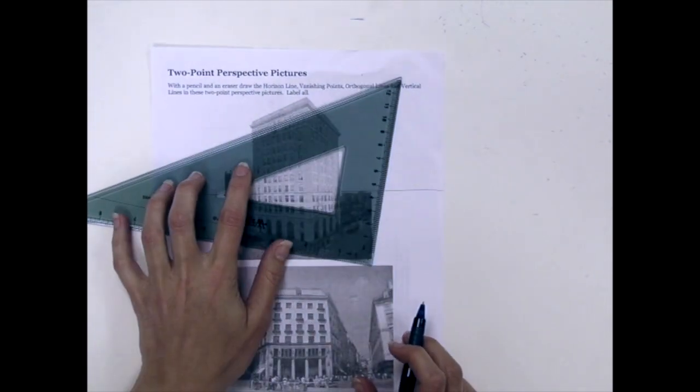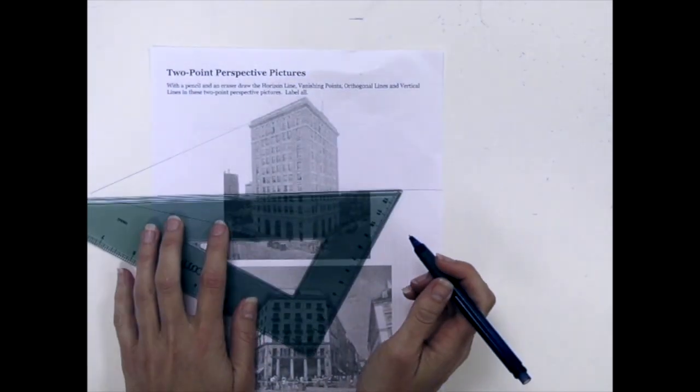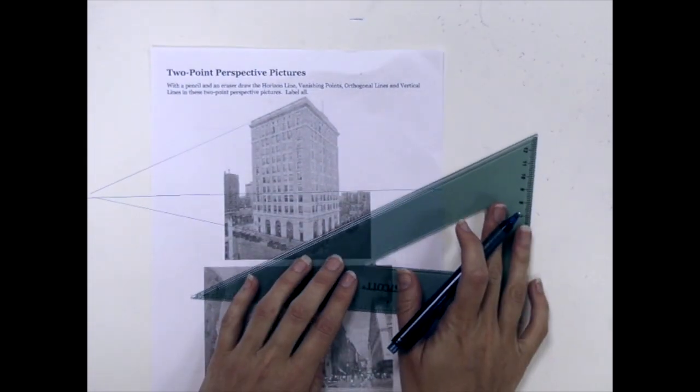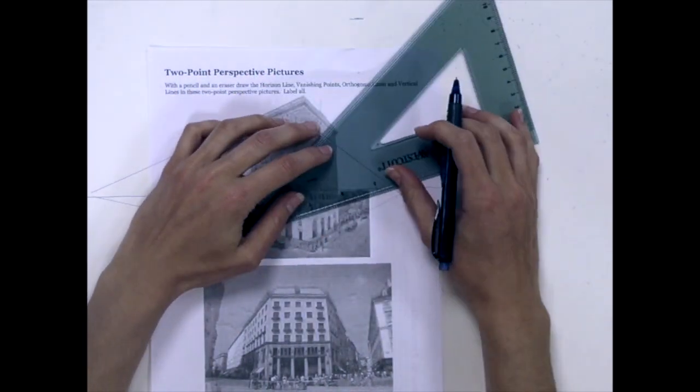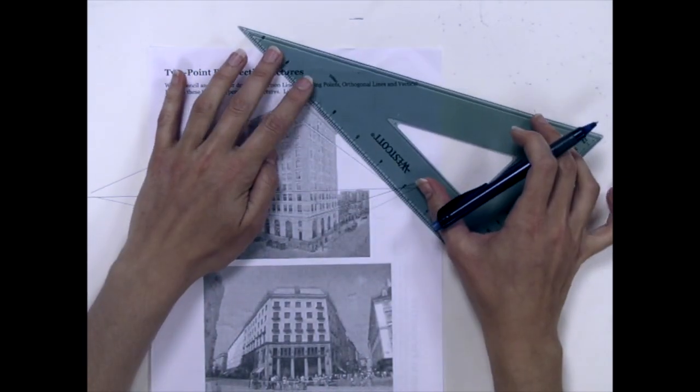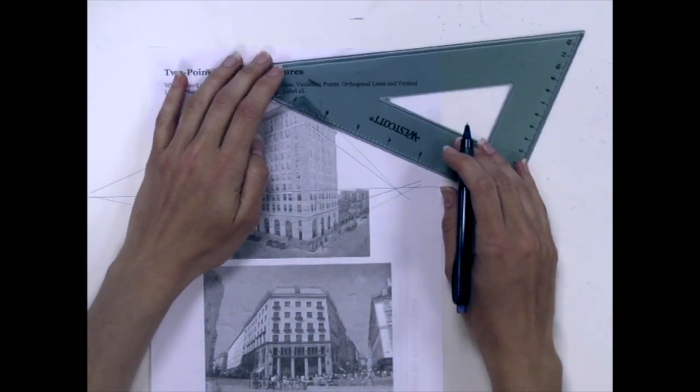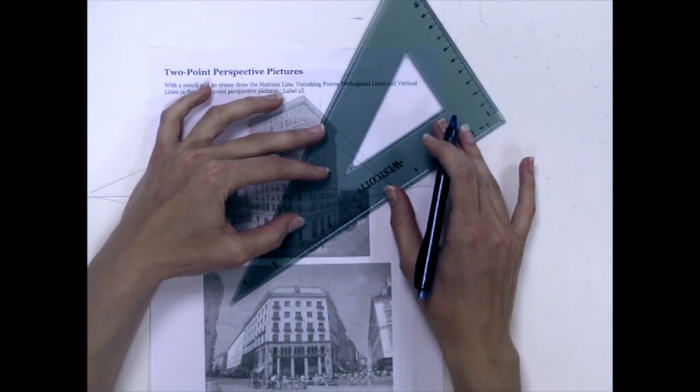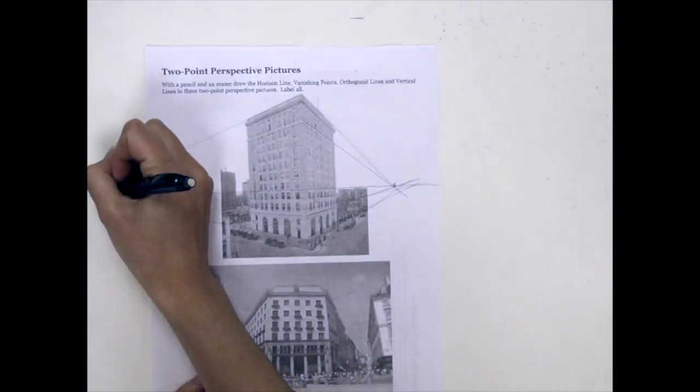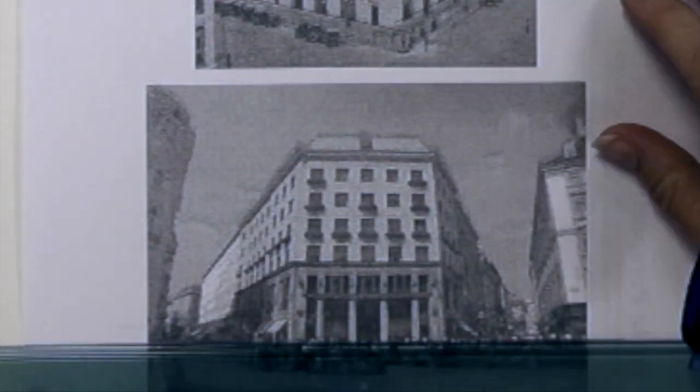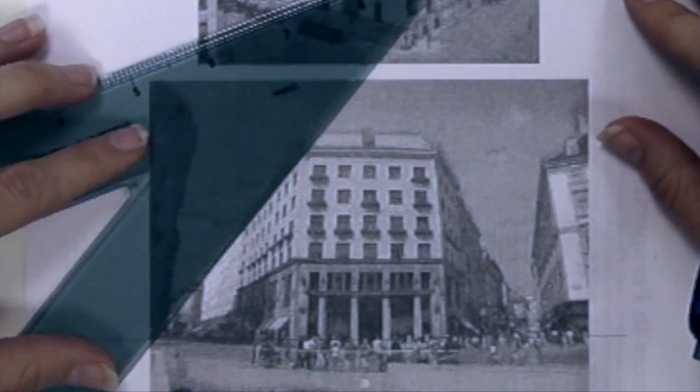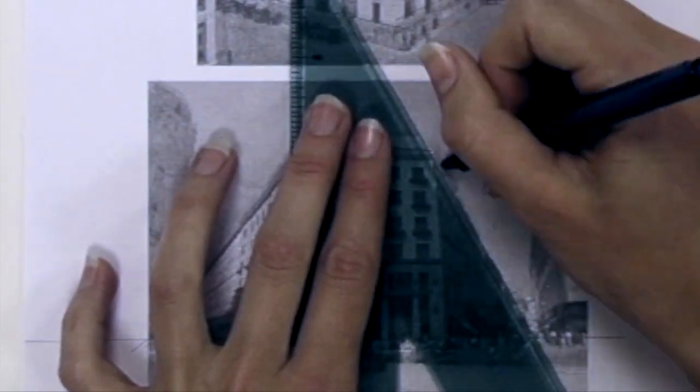Now moving into two-point perspective. We're doing this same thing where we look at a photograph and use the angles to sort of reverse engineer where the vanishing points would be. I'm tracing a lot of angles until I find the right point. Down here, it's a little bit easier. The front edge of the building is not in perspective. It's facing us, so we have to go with the left and right sides.